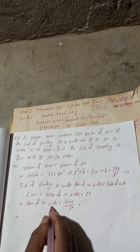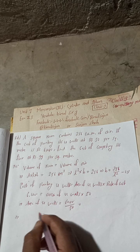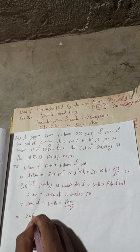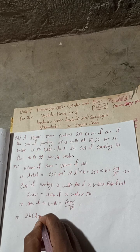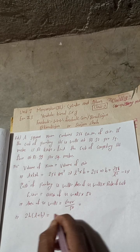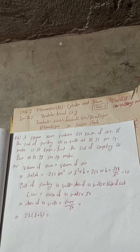The formula for area of 4 walls is 2H(L + B). This equals 128. So 2H(L + B) = 128.